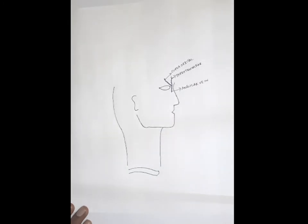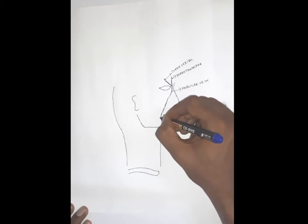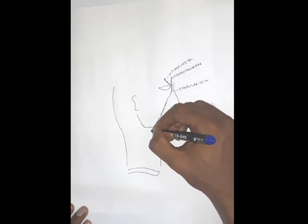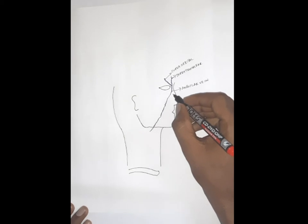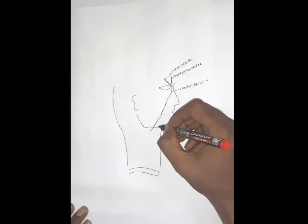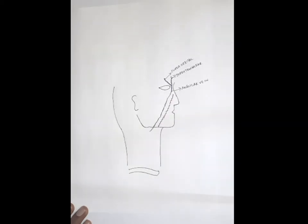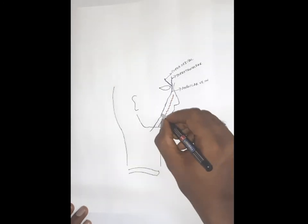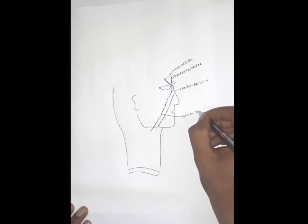The angular vein continues down in the face as the facial vein. If you want to see the dissection, you'll be locating the facial vein just behind the facial artery, which is tortuous and running medial to it. So in the face, the facial vein lies behind the facial artery.